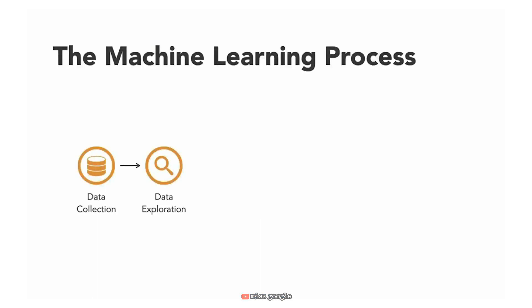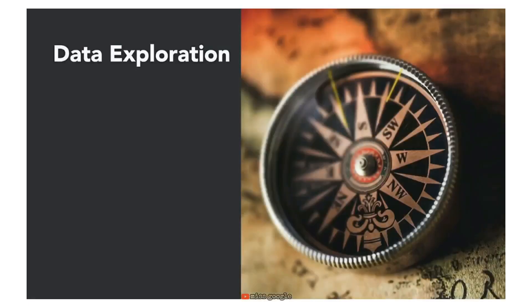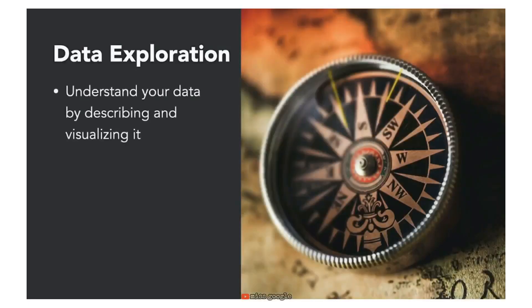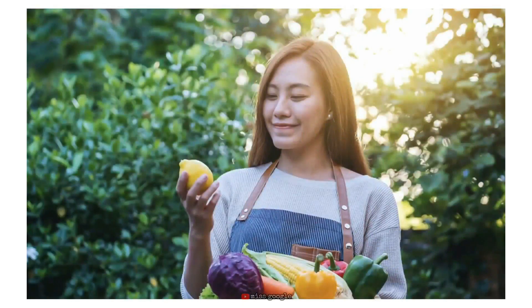The second step is data exploration — a process of describing, visualizing, and analyzing data in order to better understand it. With data exploration we can answer questions such as: how many rows and columns are in the data? What type of values are stored in the columns? Are there missing, inconsistent, or duplicate values? And are there outliers? The data exploration step is like inspecting every ingredient to make sure it is fresh, ripe, and exactly what we want.